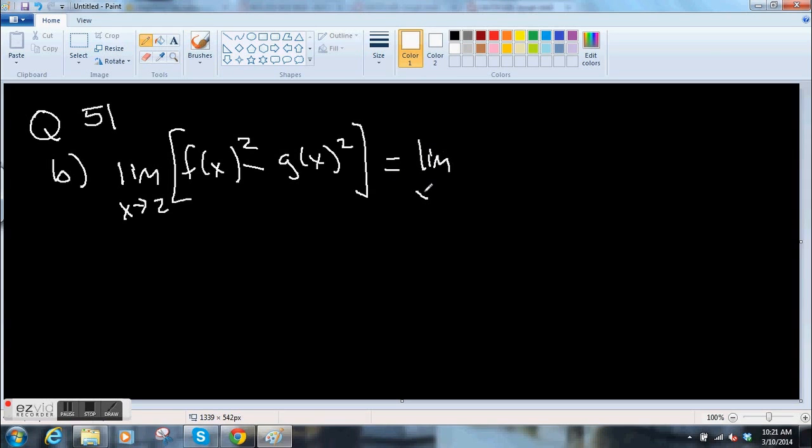So this equals the limit as x goes to 2 of, you can think of it as f of x times f of x, right, squared. You don't have to, you can just think of it as f of x squared minus the limit as x goes to 2 of g of x squared.